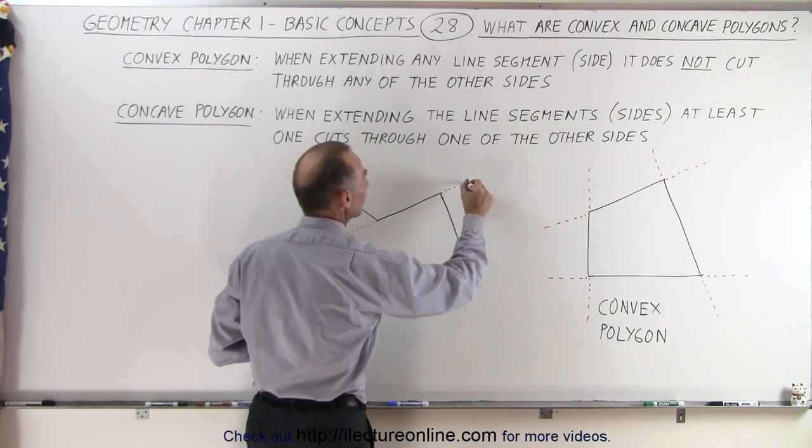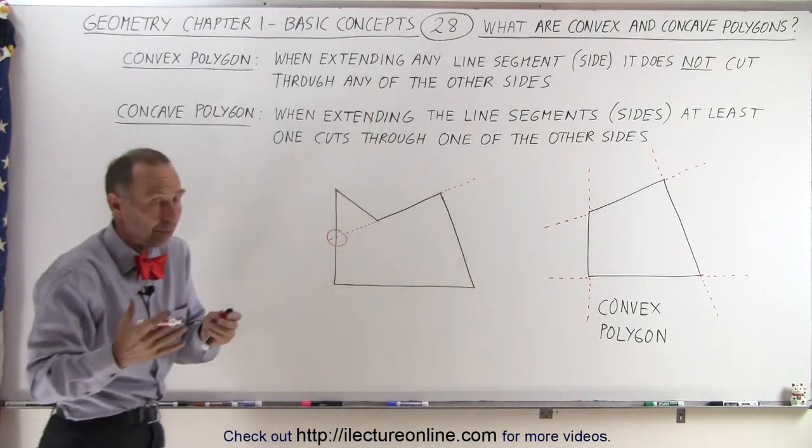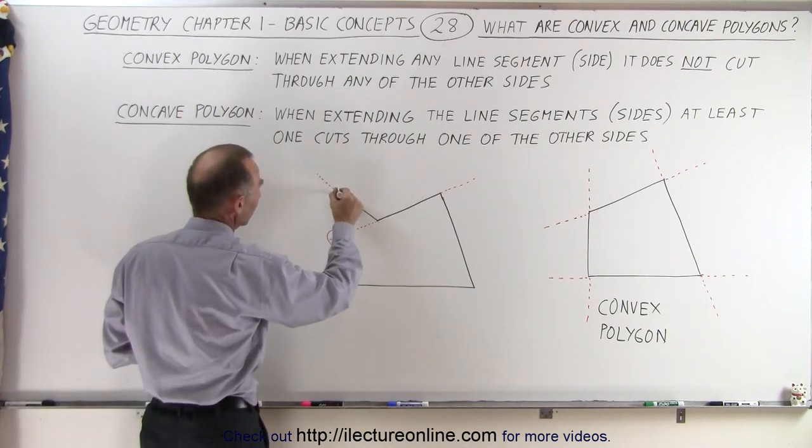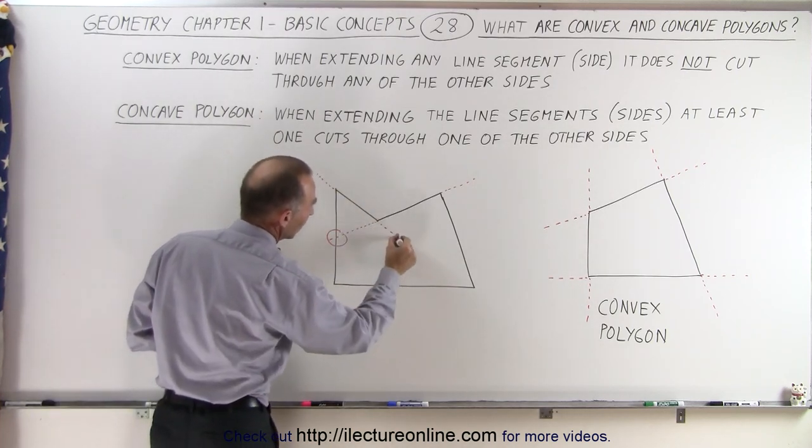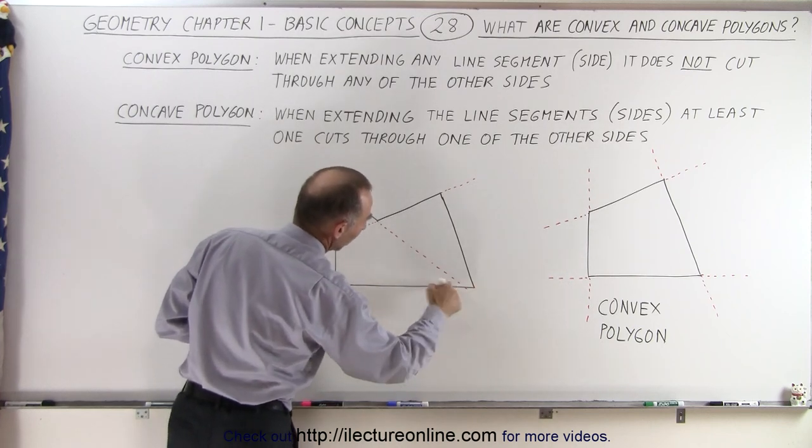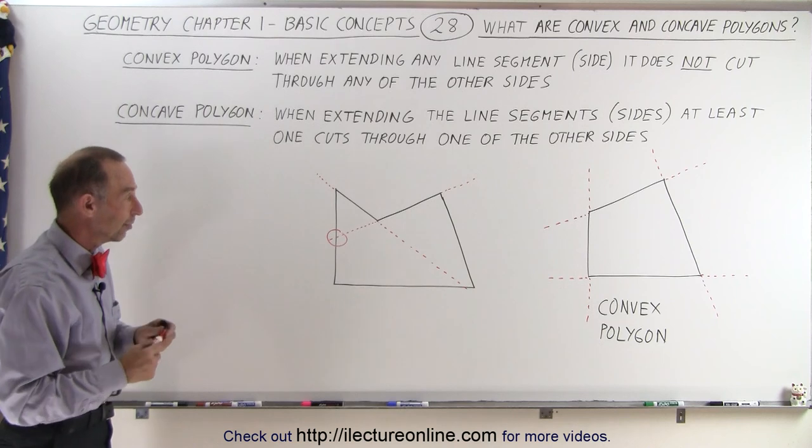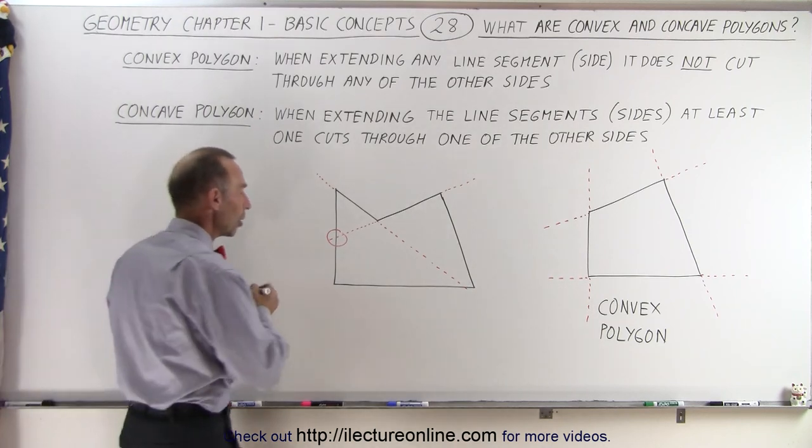But it's not the only side. It only needs one side to be considered a concave polygon, but take a look at this side. If we extend it here, nothing happens on that side. But here you can see that it will also cut through another side. That's the second reason. You'd only need one, and so you can definitely call this a concave polygon.